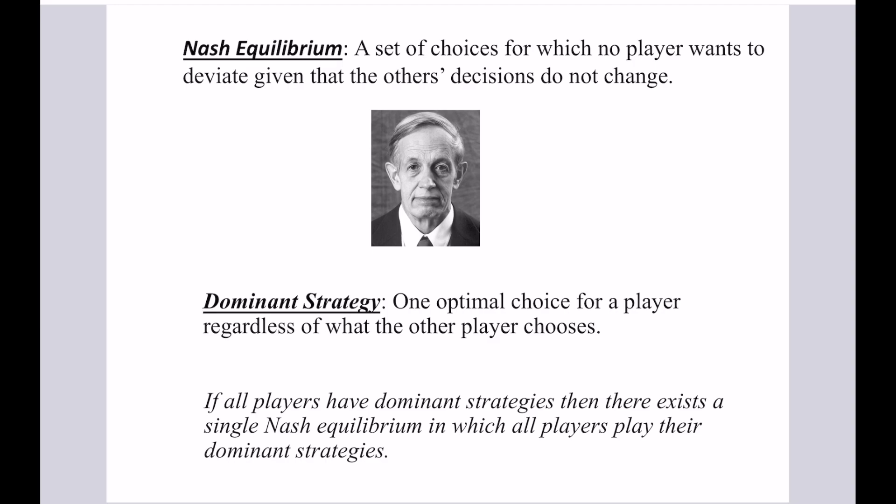The idea is something is a Nash equilibrium if, given that everyone else doesn't change their decision, you don't want to change yours — and that holds for all players. A dominant strategy, very simply, is an optimal choice for a player regardless of what the other player or players choose. It's something you're going to do no matter what. And if everyone has a dominant strategy, then there is one single Nash equilibrium in which all players play their dominant strategies.